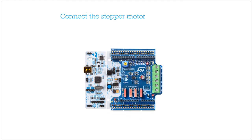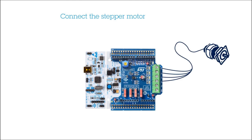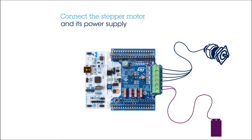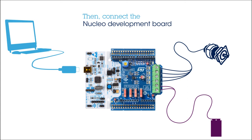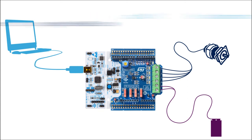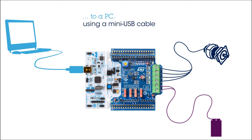First, connect a bipolar stepper motor to the expansion board, taking care to identify each phase as shown. Then connect a low voltage supply like a 9-volt battery. Next, connect the STM32 Nucleo Development Board to a PC using a mini-USB cable.